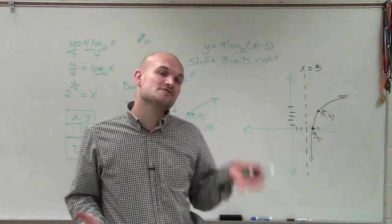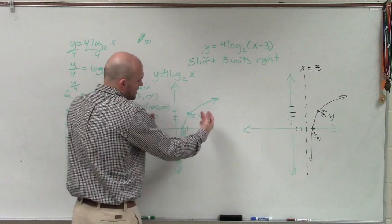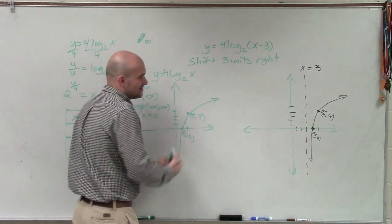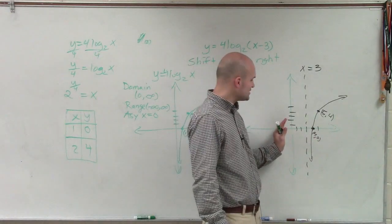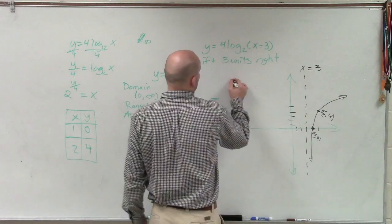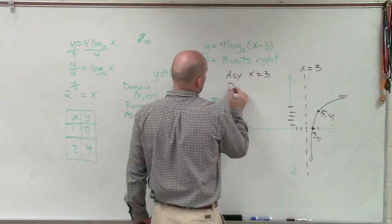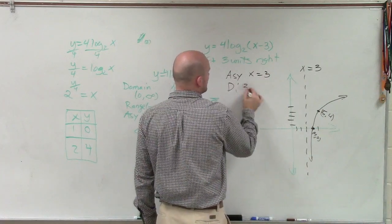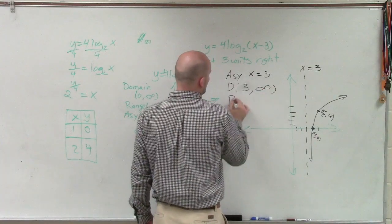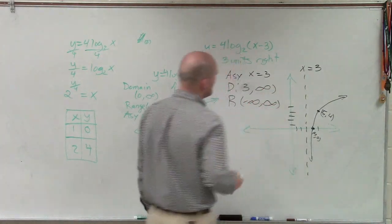And that makes a big difference as far as my domain, because now, when my asymptote was at 0, we know that all the values had to be at least positive. Well, now, all my values for my domain, my input values, have to be greater than 3. So as my asymptote now changes to x equals 3, my domain now changes from, instead of 0, it's from 3 to infinity. My range, though, however, is unchanged, so it'd be negative infinity to infinity.